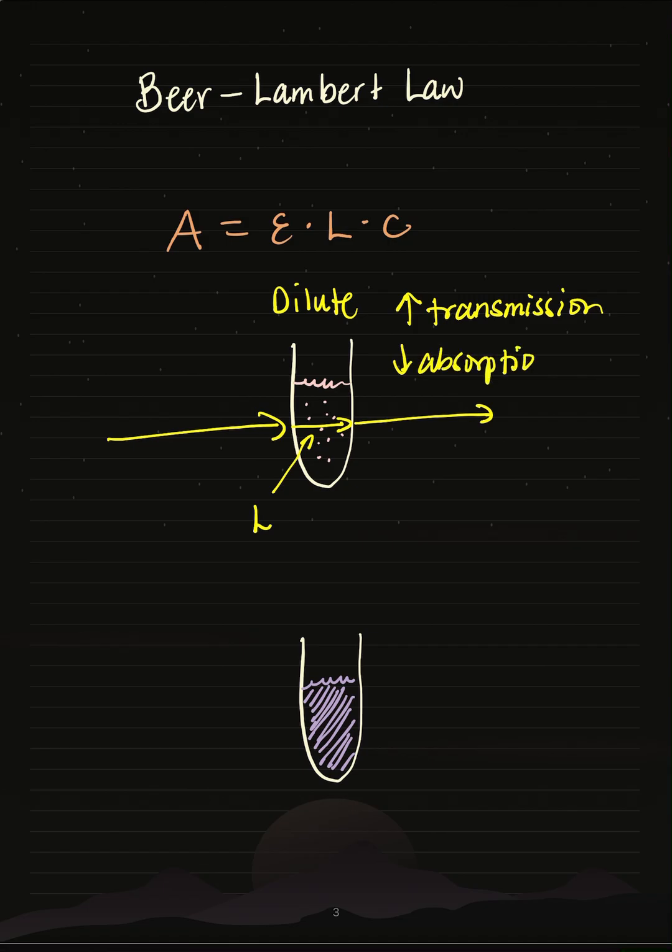Now, if we look at the cuvette underneath, this represents my concentrated solution, meaning that there's a lot more solute dissolved in it. So when the light comes in, it's going to go through the solution. Again, this part that it travels through is called my path length, but because the concentration is so high, there's only going to be a little bit of transmission. A lot of light will get absorbed.